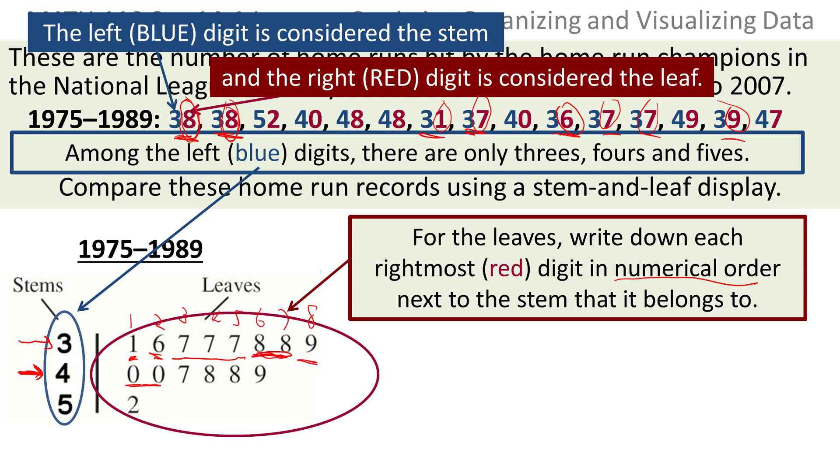You'll find there are two forties, a forty-seven, two forty-eights, and a forty-nine. Then you move to the five, and there's only one of those, a fifty-two. So the stems are the leftmost digits. The leaves are the rightmost digits. If you want to reconstruct the number, you take the stem and the leaf, and if you shove them back together, you get the number. That's all there is to it.